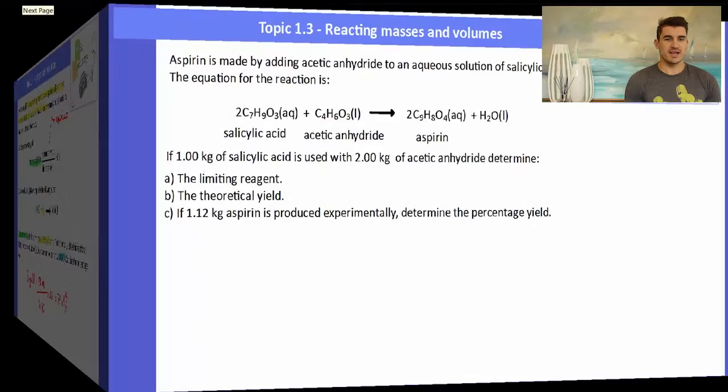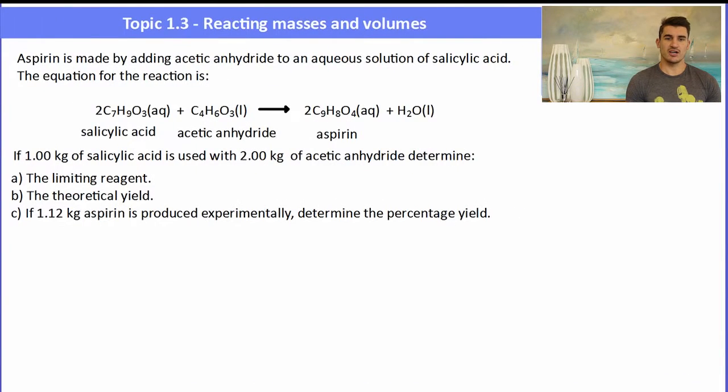Here's another example. Aspirin is made by adding acetic anhydride to an aqueous solution of salicylic acid. The equation is given: two moles of salicylic acid plus one mole of acetic anhydride forms two moles of aspirin. We've been told that we have one kilogram of salicylic acid and two kilograms of acetic anhydride. Because they've given us the mass of both of the reactants, we need to work out which one is limiting and which one is excess.